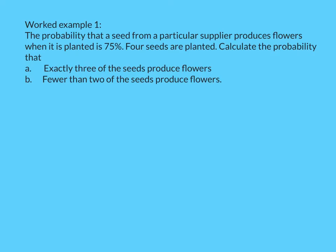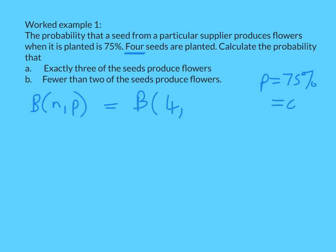Worked example one. The probability that a seed from a particular supplier produces flowers when it's planted is 75%. Four seeds are planted. First, let's write this as a binomial distribution: B(N, P). The number of trials is four seeds planted, so N = 4. The probability of success P equals 75%, which is 0.75. And Q, the probability of failure, is 25%, which is 0.25.